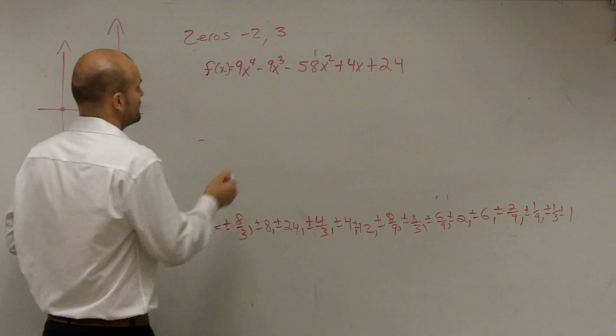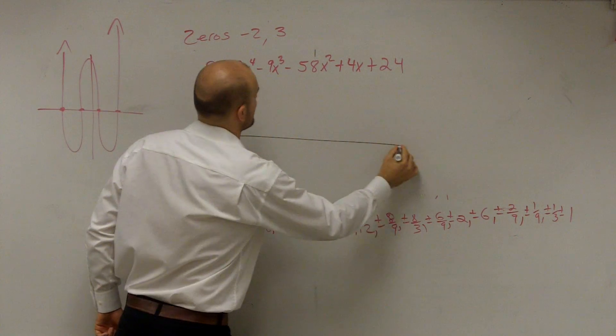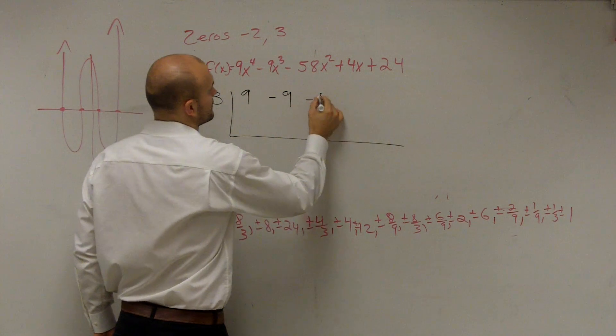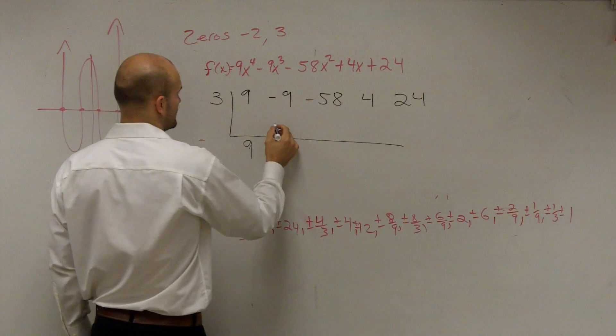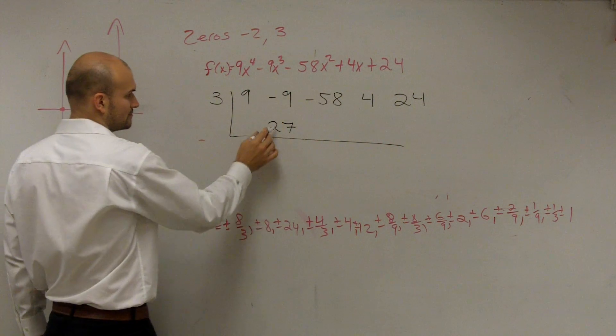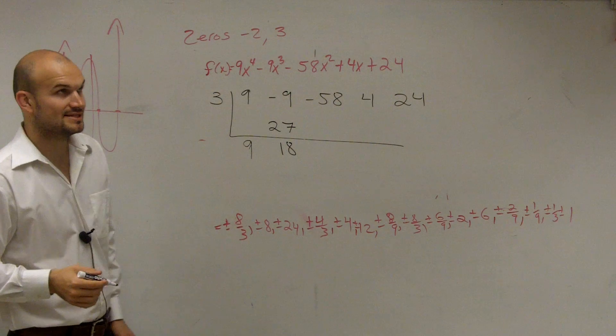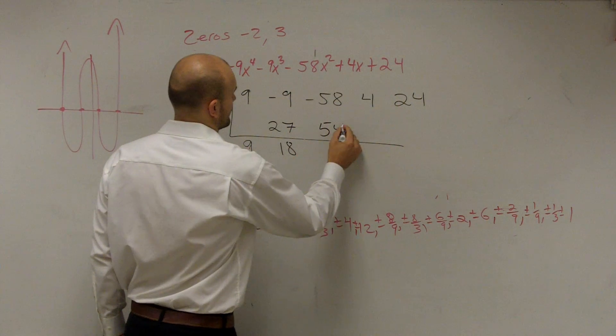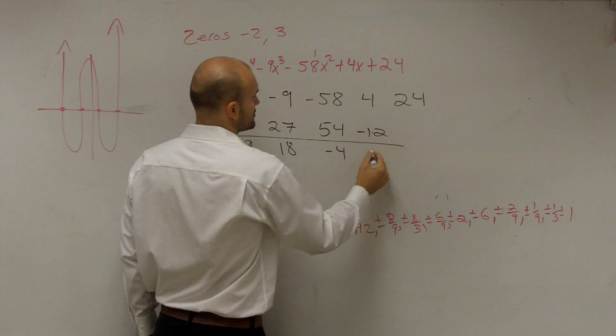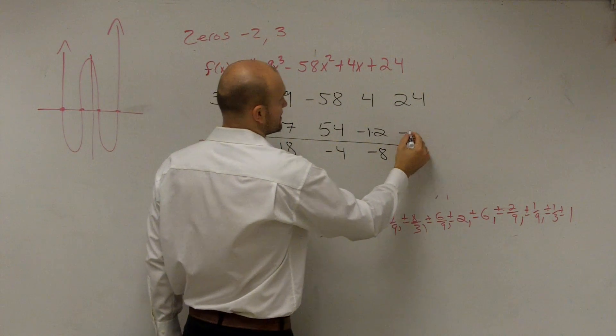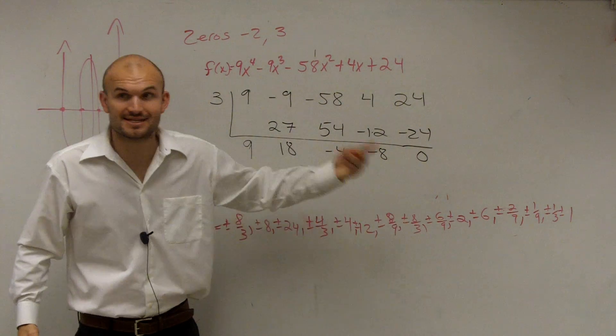So I'm going to write all this out real quick. So let's use synthetic division for 3. So I do 3, we got 9, negative 9, negative 58, 4, and 24. Bring down the 9, 9 times 3 is going to be 27, negative 9 plus 27 is going to be 18, 3 times 18 is going to be 36, it's going to be 54, negative 4. 3 times negative 4 is going to be negative 12, which is going to give you a negative 8. Negative 8 times 3 is negative 24, remainder 0.